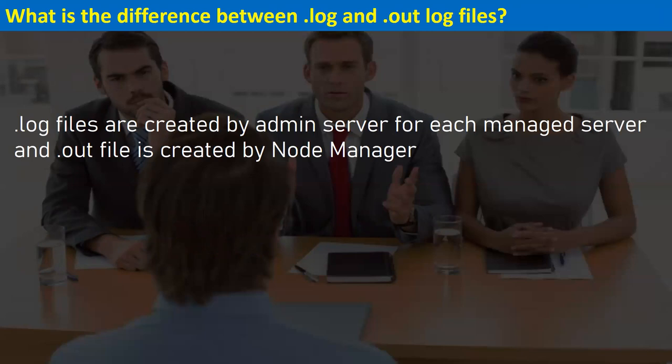What is the difference between a .log and a .out file? Whenever we use a node manager to start a managed server, apart from the server's log file, it creates a separate log file with the same name as the managed server but with a .out extension. Inside your logs directory, you will see two files: .log is the managed server's standard log file, and .out is created when you start the managed server with the help of node manager.